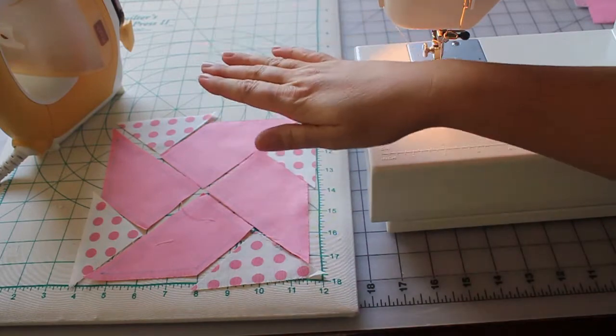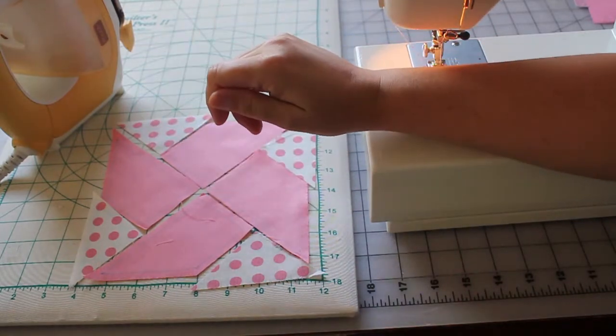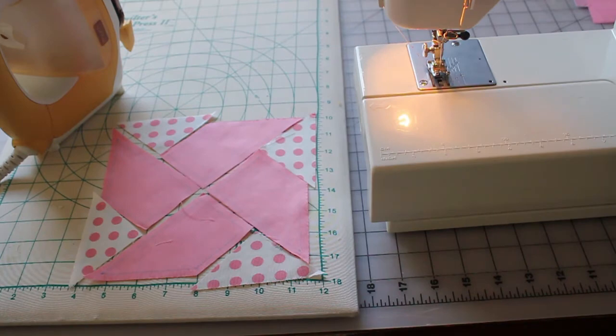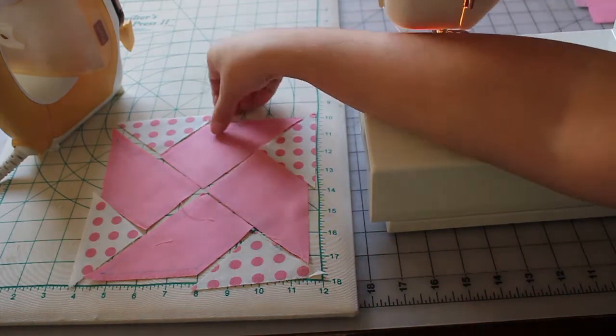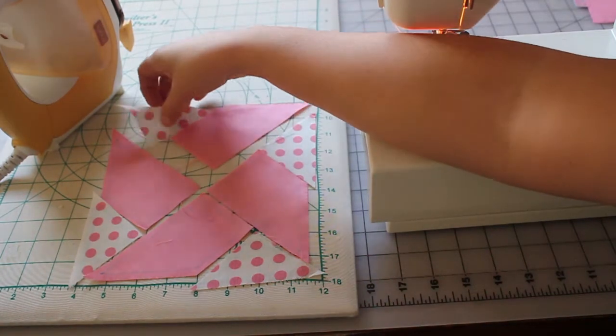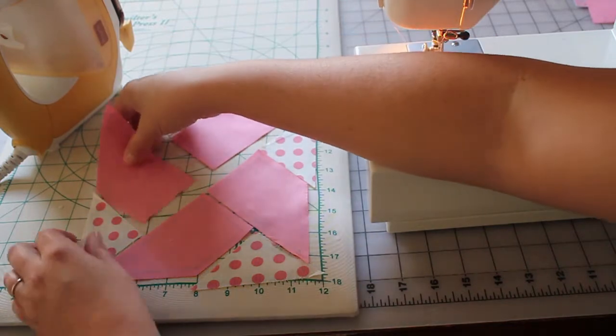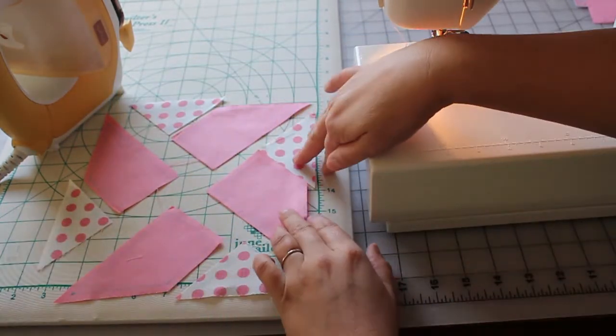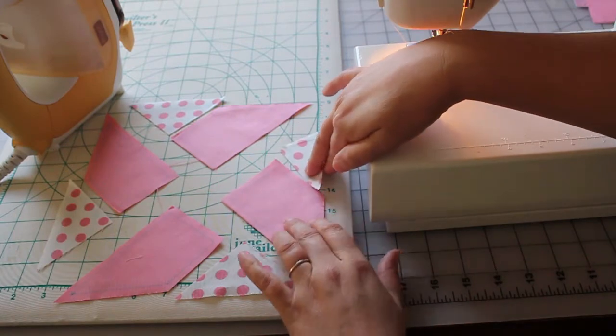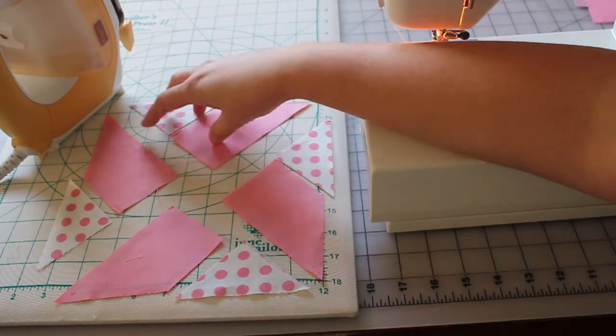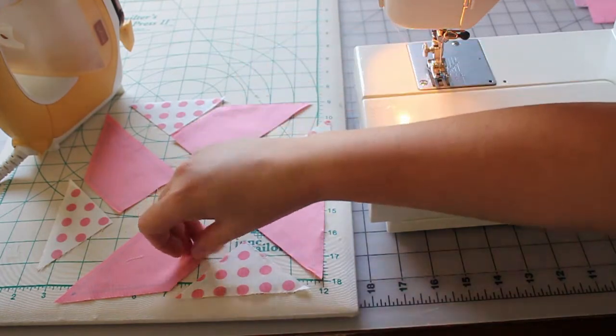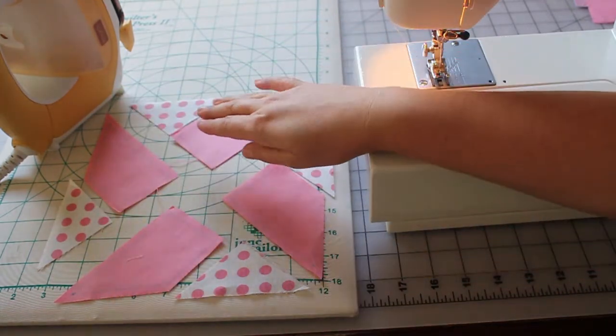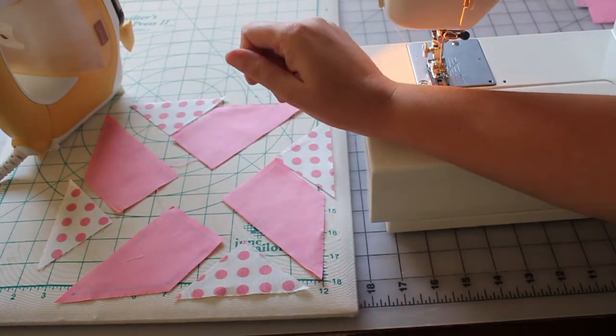As you can see this has been laid out completely different than any other block we've done so far. Had to change things up on you this last little bit to show you something a little different. This is made out of four different sections and each section is a triangle made out of two pieces. See how that looks all split up? So these two pieces will come together to make a triangle. Same here, same here, same here. And then we'll put these four pieces together. Super simple, I promise.